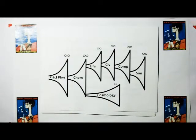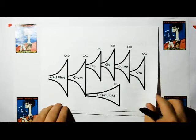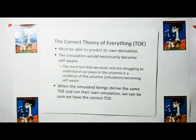But now there's an interesting caveat. This is where the conjecture begins. So if we do run such a simulation, this simulation must be able to predict its own derivation. And then the simulation would necessarily become self-aware. If we're a simulation, the mere fact that we exist and are struggling to understand our place in the universe is a condition of the universe becoming self-aware. So when the simulated beings derive the same theory of everything and run their own simulation, we can be reasonably sure we have the correct theory of everything.